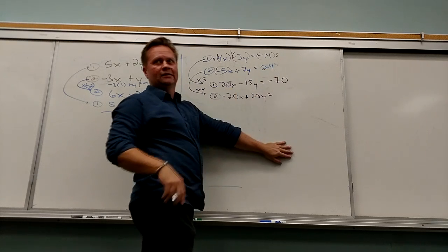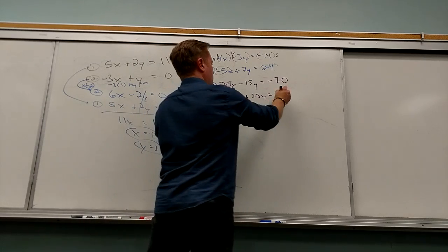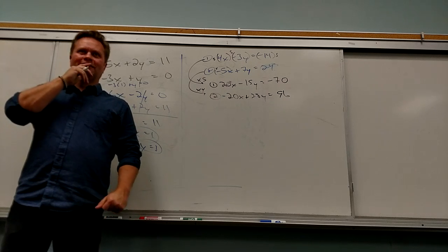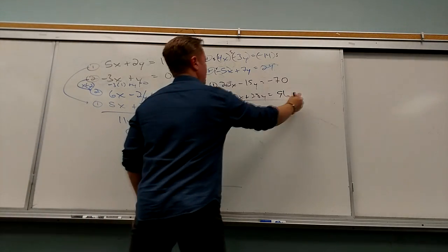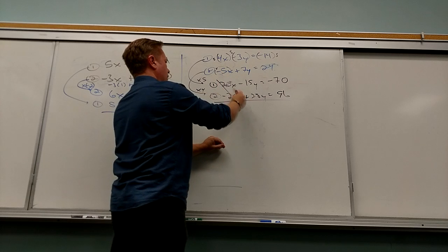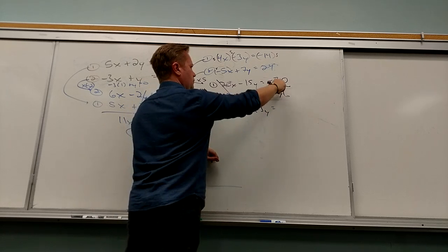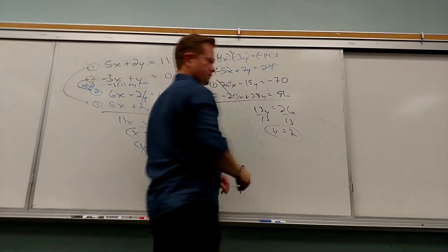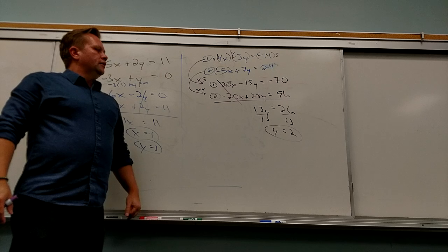4 times 20 is 80, 4 times 4 is 16, so 80 plus 16 is 96. The biggest mistake is people don't multiply the whole thing by whatever — everything's got to change. So 4 times negative 7 gives 28y and 4 times the right side. When I add the equations, the x's die. What do I get? 13y equals 26, so y equals 2.